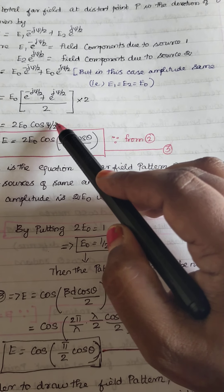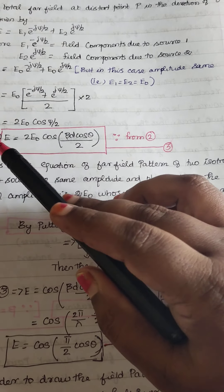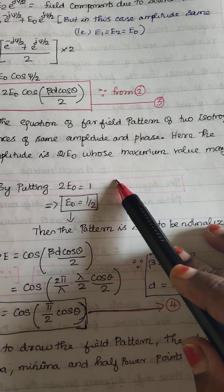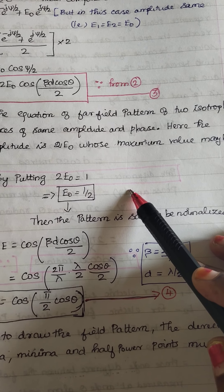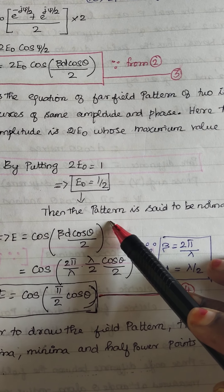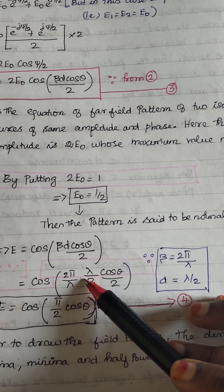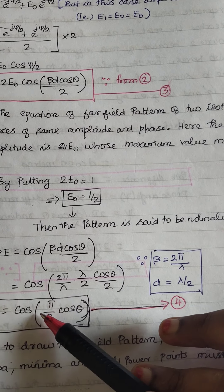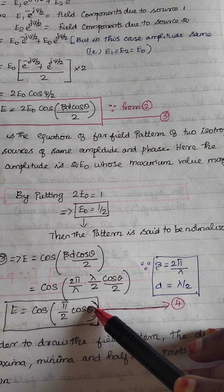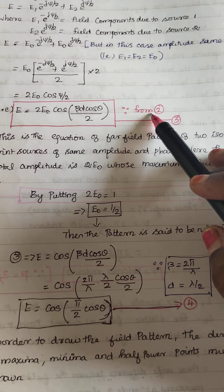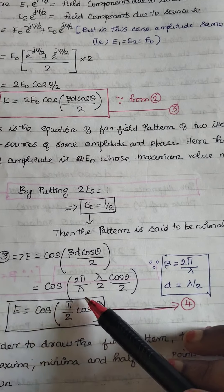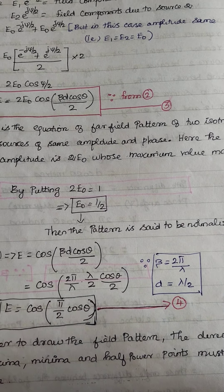Substituting the value of psi, which is beta d cos theta, the total electric field becomes 2 E0 cos of beta d cos theta by 2. After normalization, setting 2 E0 equal to 1 means E0 equals 1 by 2. So E equals cos of beta d cos theta by 2. Substituting beta equal to 2 pi by lambda and d equal to lambda by 2, we get E equals cos of pi by 2 cos theta.